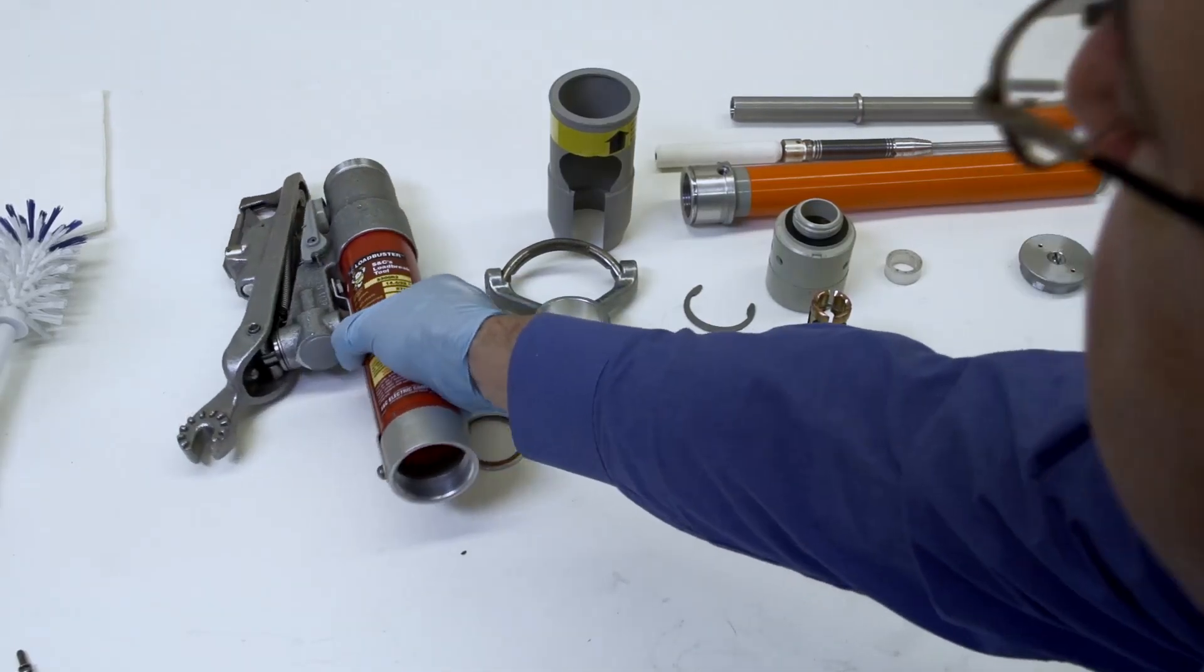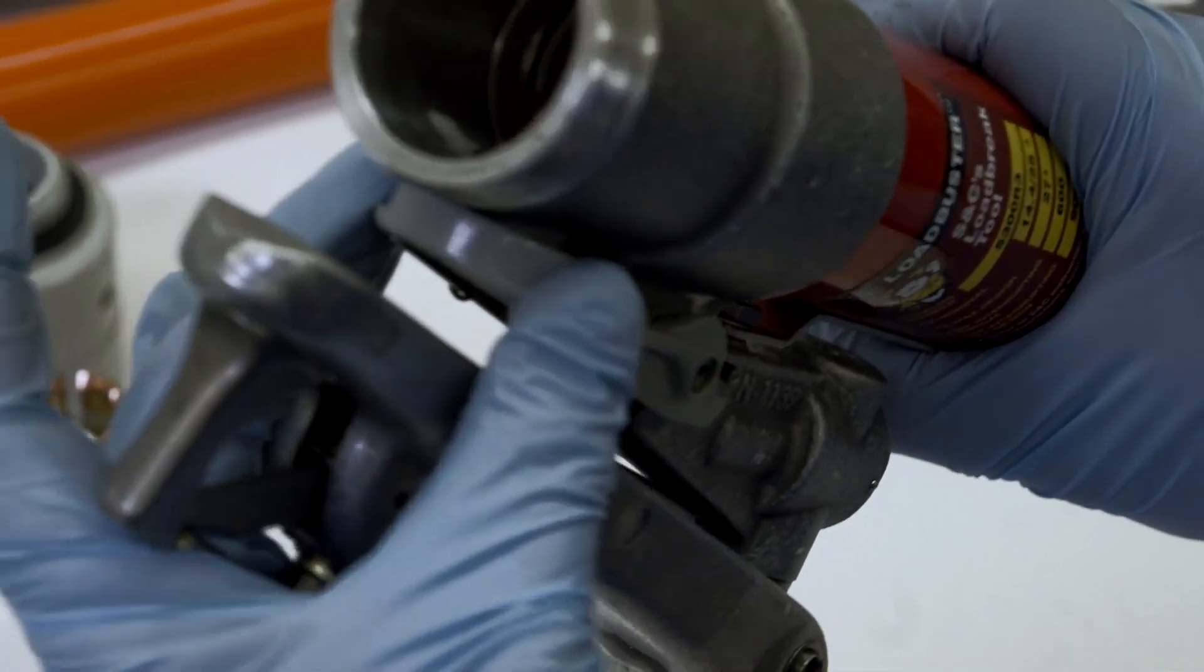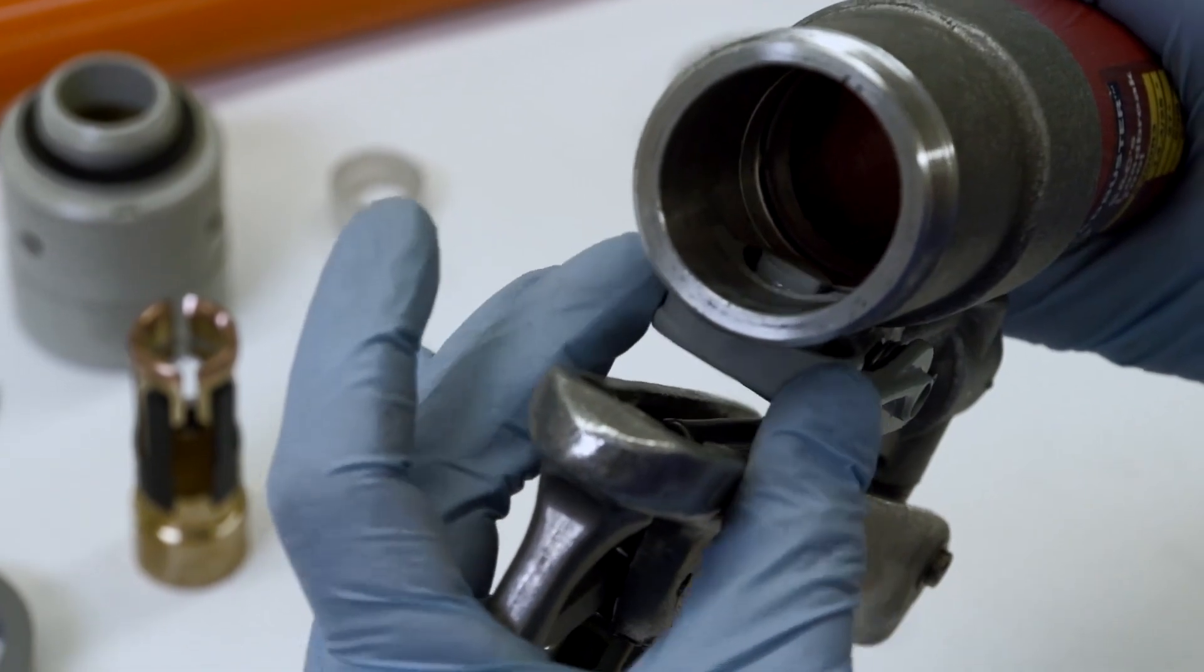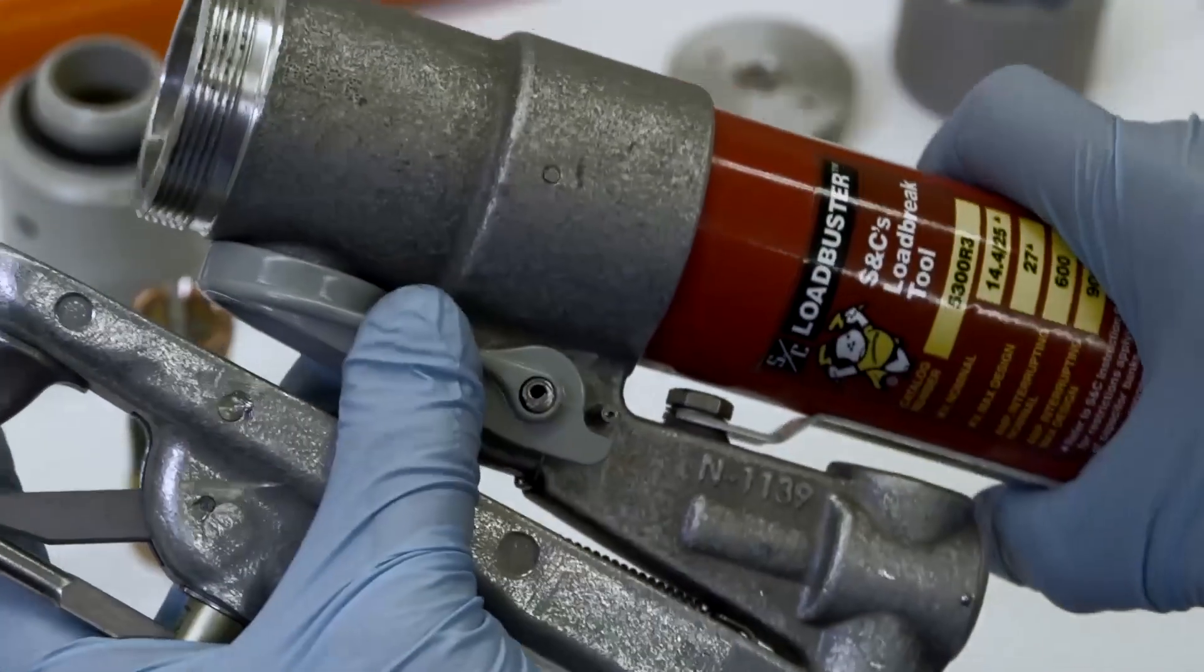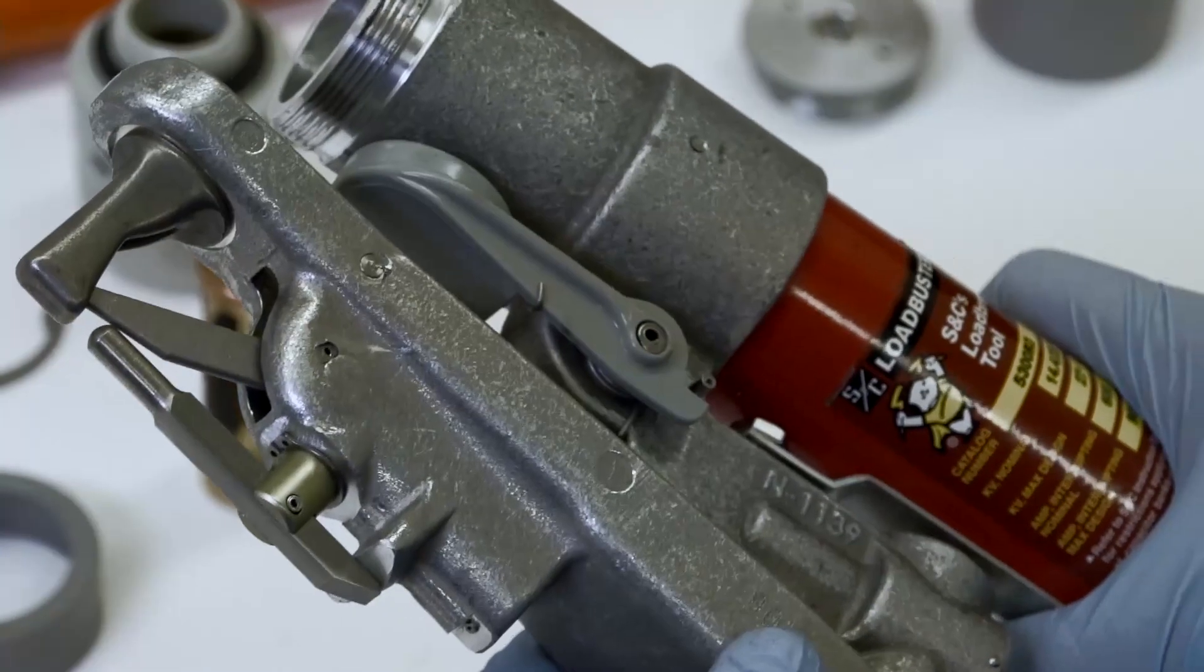Next we'll look at the latch and hook frame assembly. Examine the latch and look for excessive wear on the latching surface. The surface should be flat. Check that the latch's spring action is in good working order. Replace the latch if it is damaged.